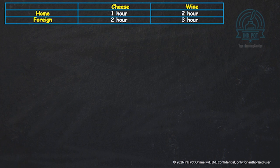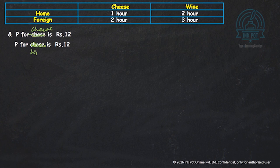Then we are also given that the price of cheese is Rs.12 and the price of wine is also Rs.12. Let me correct that. The price of cheese is Rs.12 and the price of wine is also Rs.12. So when the price of cheese is Rs.12 and the price of wine is also Rs.12, how do we figure out the relative wages?